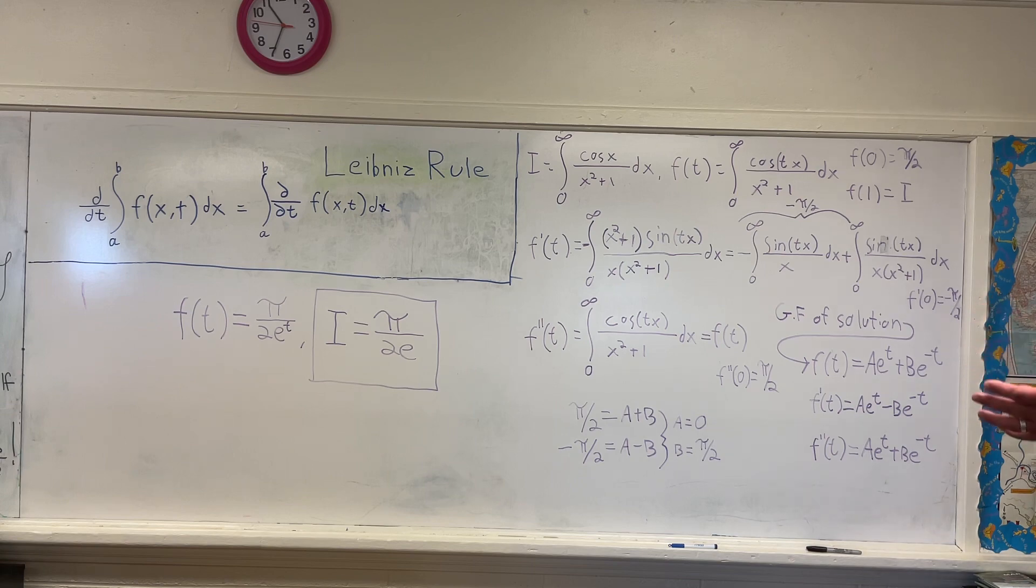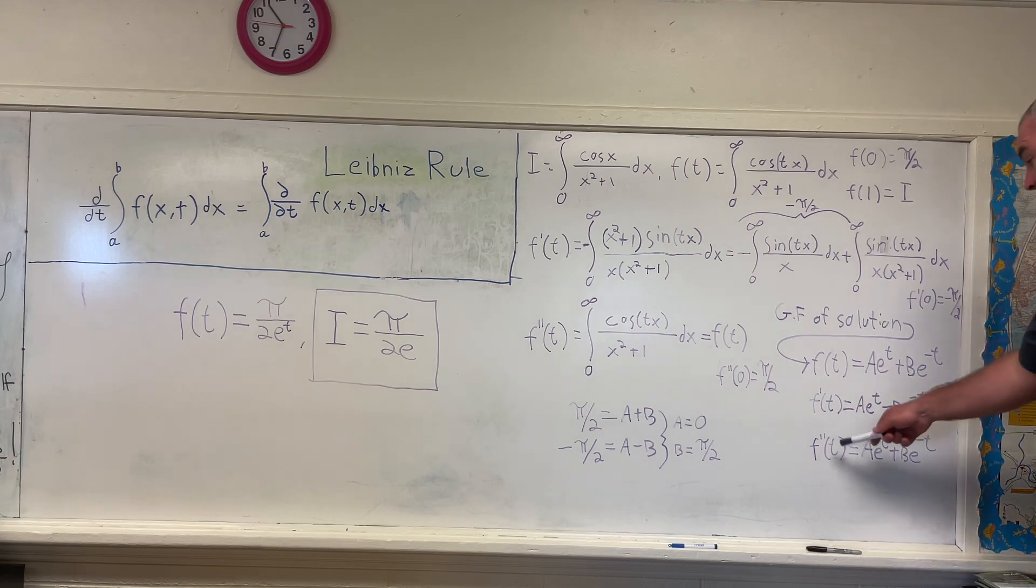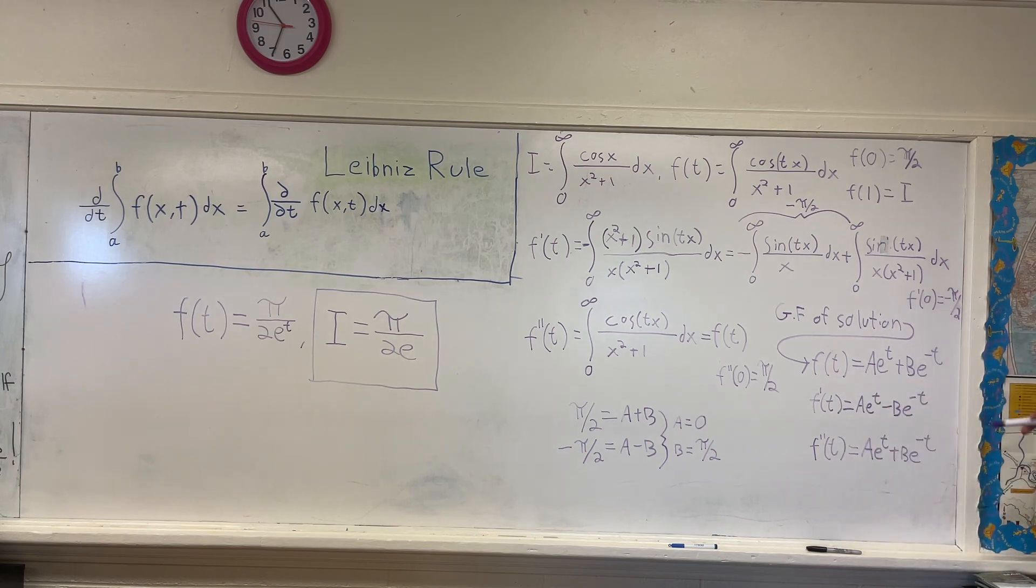In any case, the general form of our solution is given by this function right here. f of t is equal to some constant a times e to the t plus some other constant b times e to the negative t. So since we have initial values, since we have values for this equation, we have values for f of t, we have values for f prime of t, and we have values for f double prime of t.